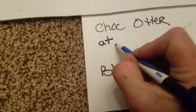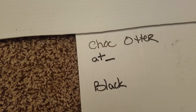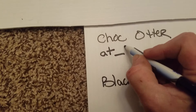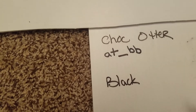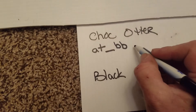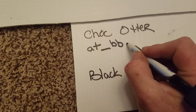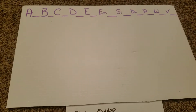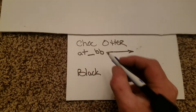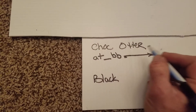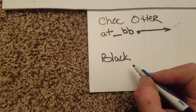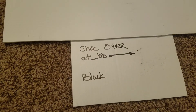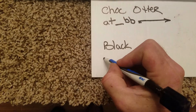We know that the chocolate otter is going to be AT — we don't know what that second gene is — and we know that because she is a chocolate, she's going to be BB. The rest of the genotype will continue on down through C, D, E and so on, as we've talked about already, but we're just going to focus on these first two loci.